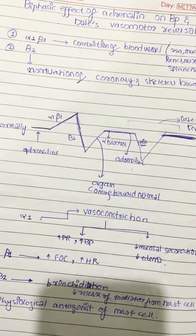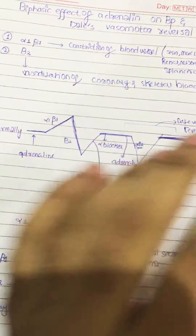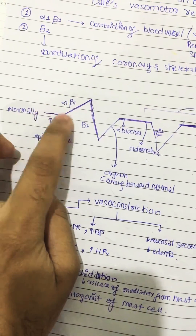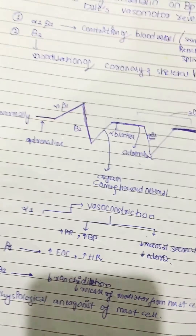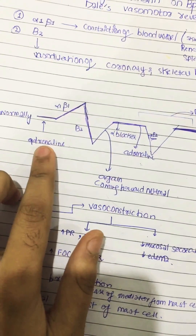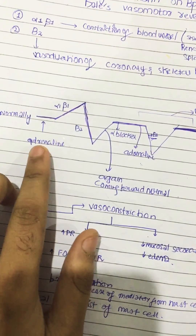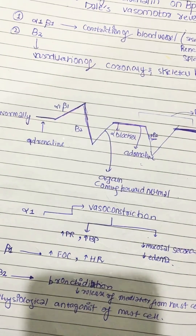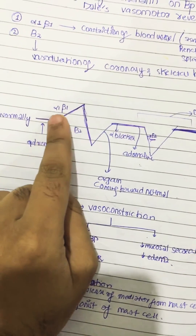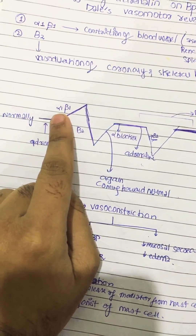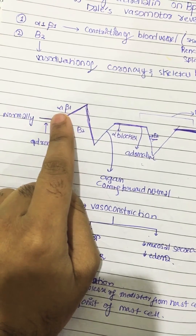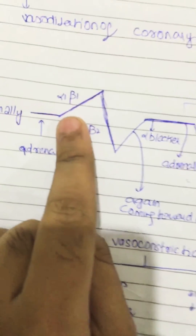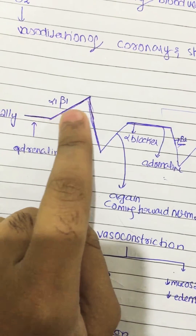Now we'll use a diagram to make this easier to understand. Normally, the blood pressure is at a baseline level. When we administer adrenaline and its level increases, it acts on alpha-1 and beta-1 receptors, causing vasoconstriction, and the blood pressure goes up.